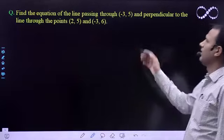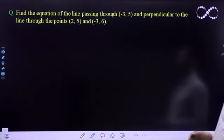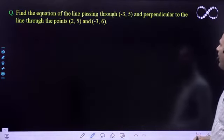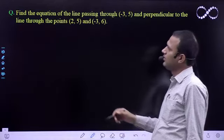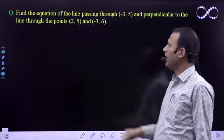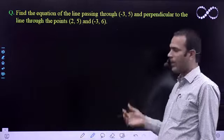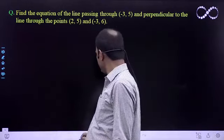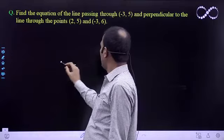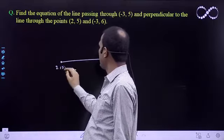Hello student, find the equation of the line passing through (-3, 5) and perpendicular to the line through the points (2, 5) and (-3, 6). Find the equation of the line perpendicular to the line.